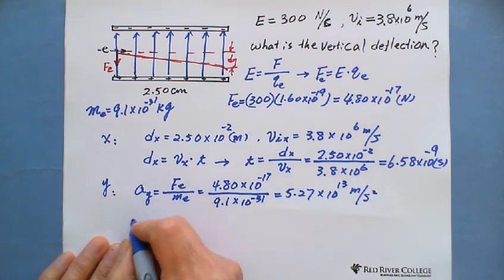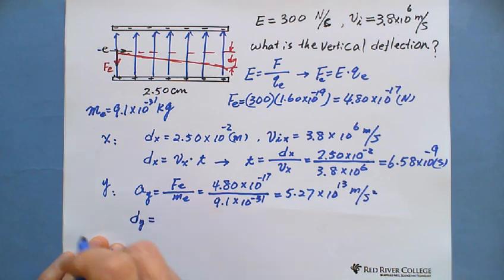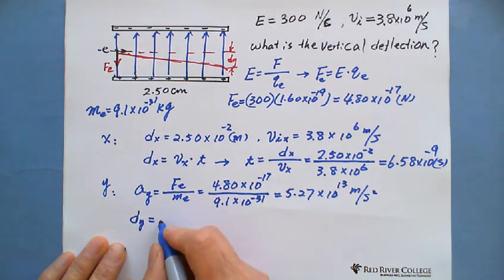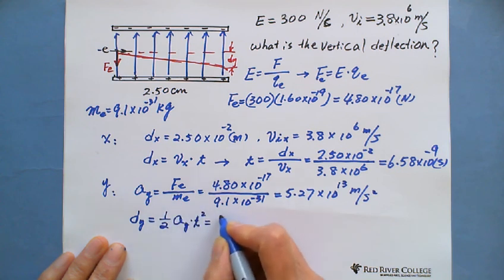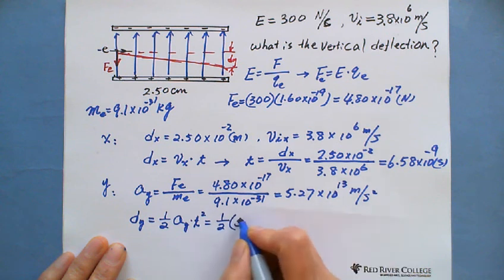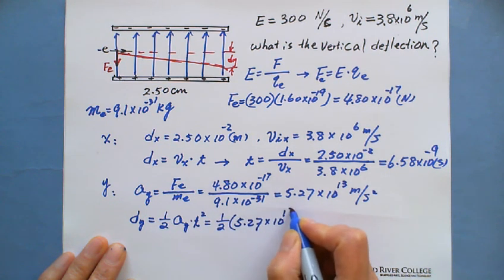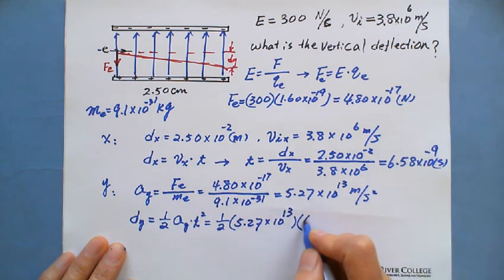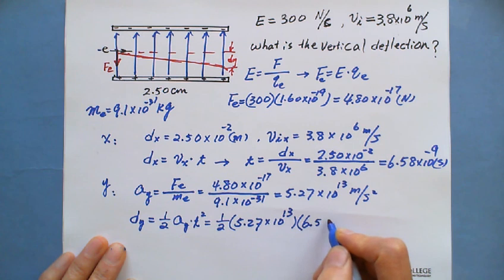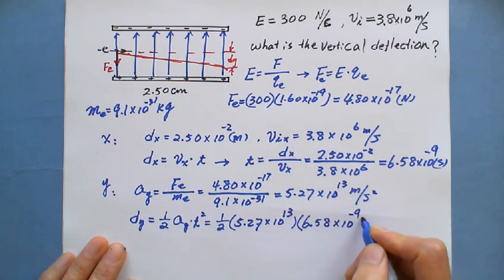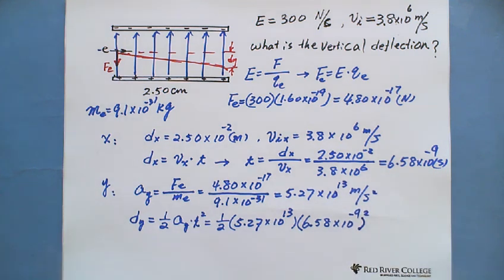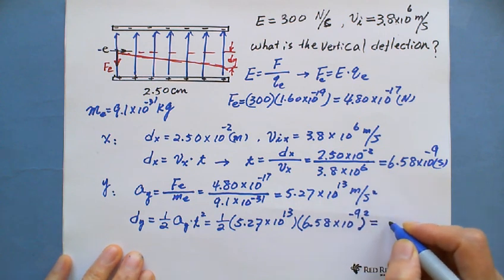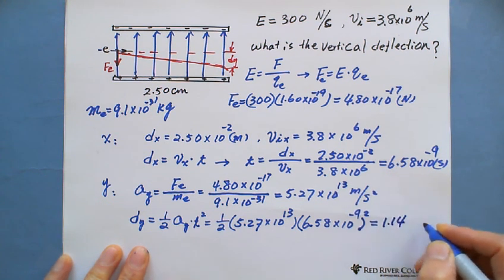So after this one, we can go to the dy equals. On vertical, the initial velocity equals 0. So the formula is 1 over 2, a times t squared. So we got 1 over 2, acceleration is 5.27 times 10 to the 13 exponent, multiply the t is 6.58 times 10 to the negative 9, close bracket squared. So after this one, we got the answer is 1.14 millimeters.